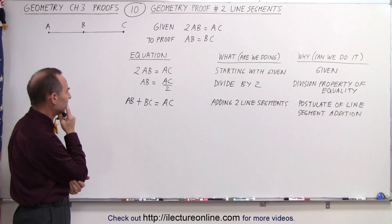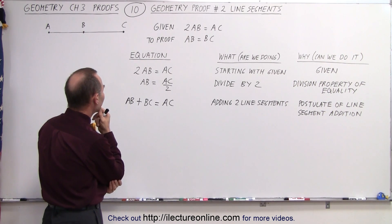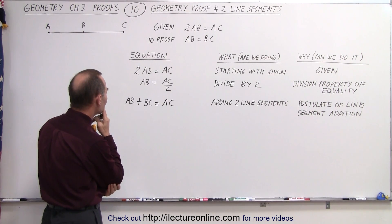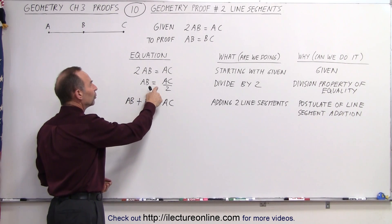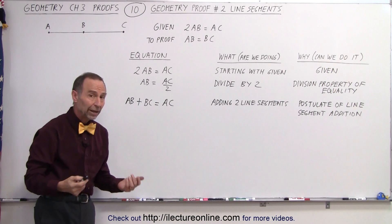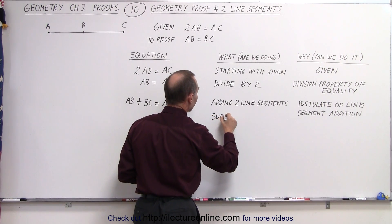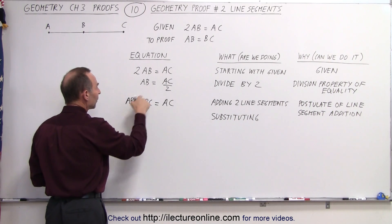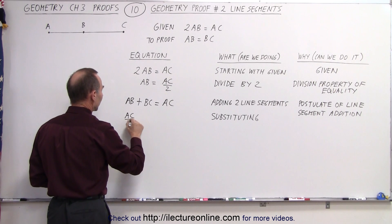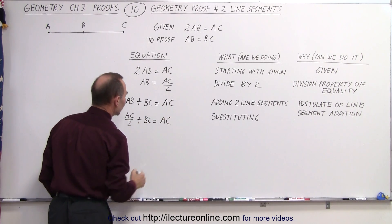Now, what should we do next? Well, let's see here. What I could do is I can maybe replace AB by what AB is equal to in terms of AC. I'm going to make a substitution. So I'm substituting line segments. What I'm doing is instead of writing AB, I'm going to write AC over 2. So AC divided by 2 plus BC is equal to AC.